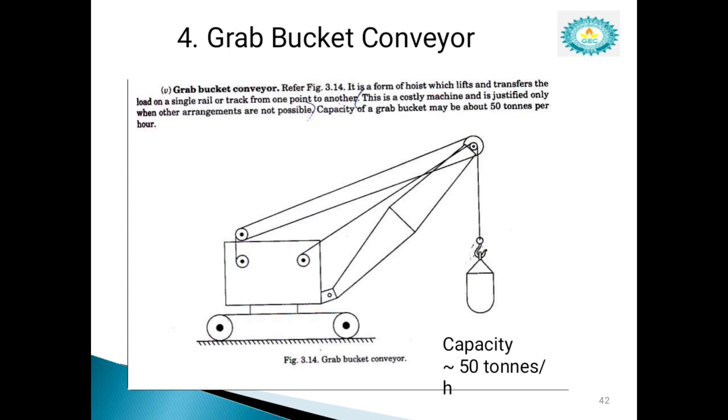The next one is grab bucket conveyor. The grab bucket conveyor lifts as well as transfers the coal from one point to another point. The grab conveyor can be used with crane or tower as shown in figure. The bucket operating over a distance of 60 meters transfers nearly 100 tons of coal per hour. The initial cost of this machine is very high and operation cost is less.